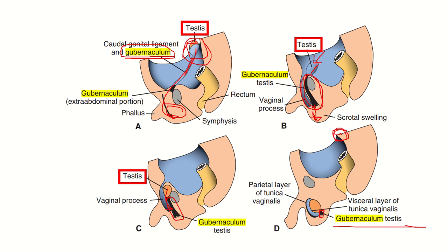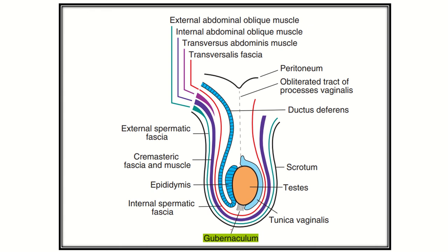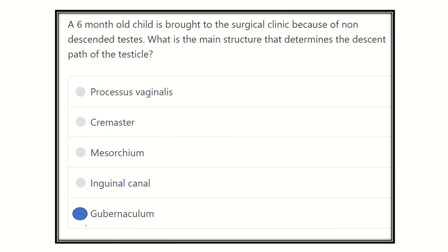The gubernaculum is now very small. The testis, primarily present in the posterior abdominal wall, finally descends into the scrotum by the help of the gubernaculum. The gubernaculum lies at the bottom of the scrotum, connects with the testis, and pulls it downward. So our final answer is gubernaculum — it determines the descent path of the testis. As for processus vaginalis, it travels down with the testis but is not responsible for the descent itself.